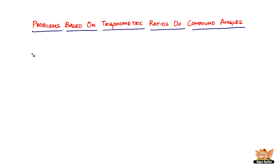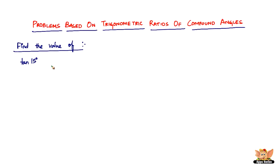In this video, let us continue to solve more problems based on trigonometric ratios of compound angles. Here we've got a question which says: find the value of tan 15 degrees. We write it as tan of 45 degrees minus 30 degrees.